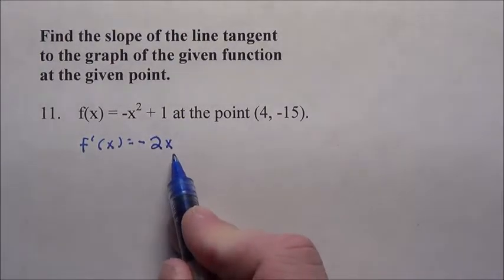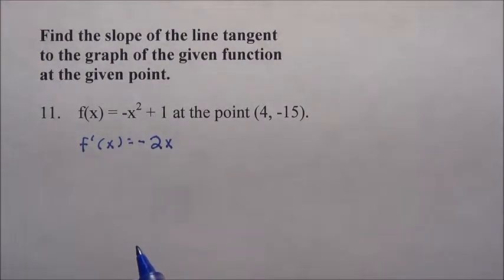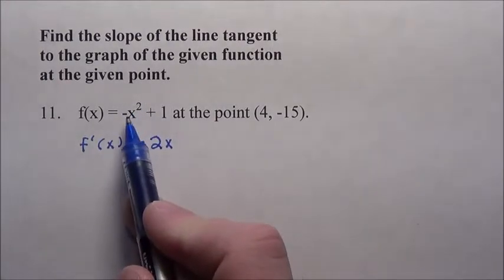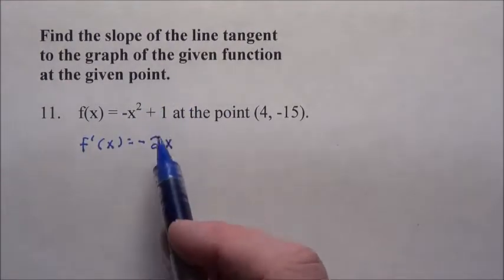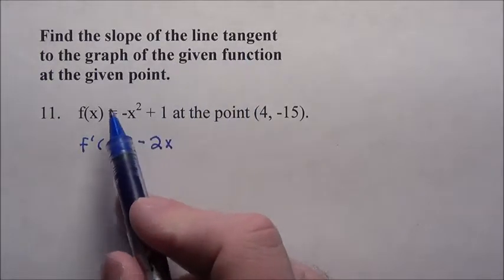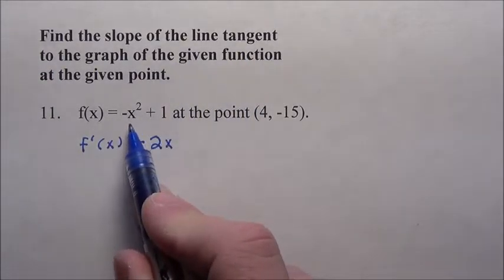So here, -2x will tell us the slope at any particular point on this line right here. Again, it's really the slope of the tangent line at any point on this graph.